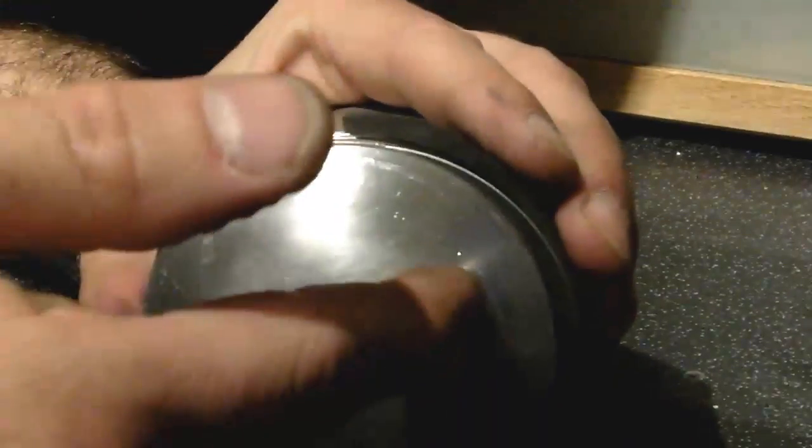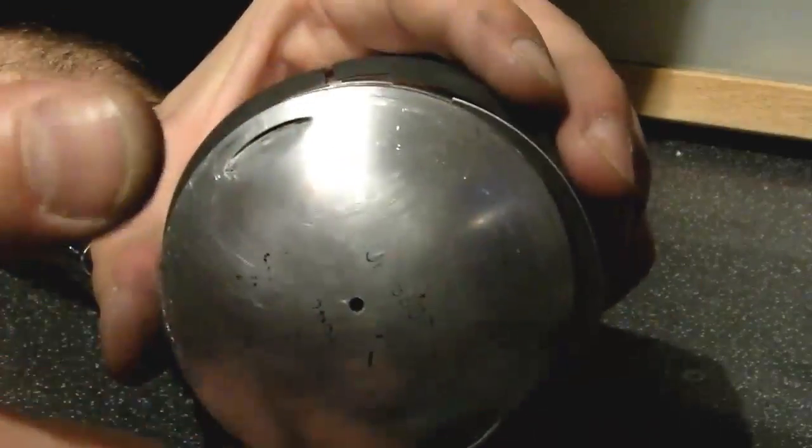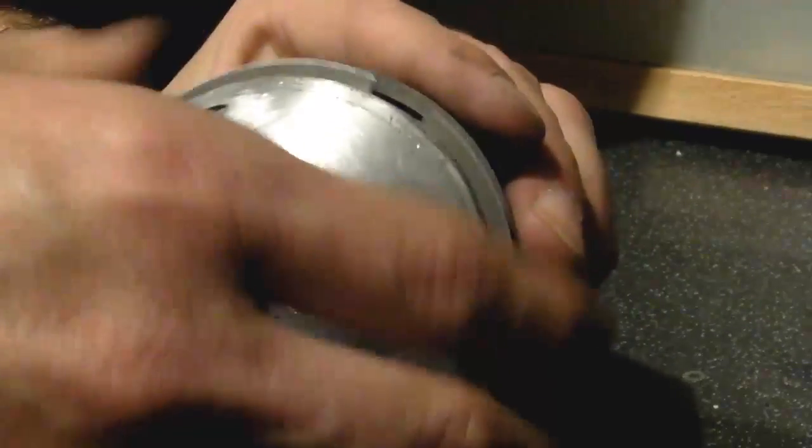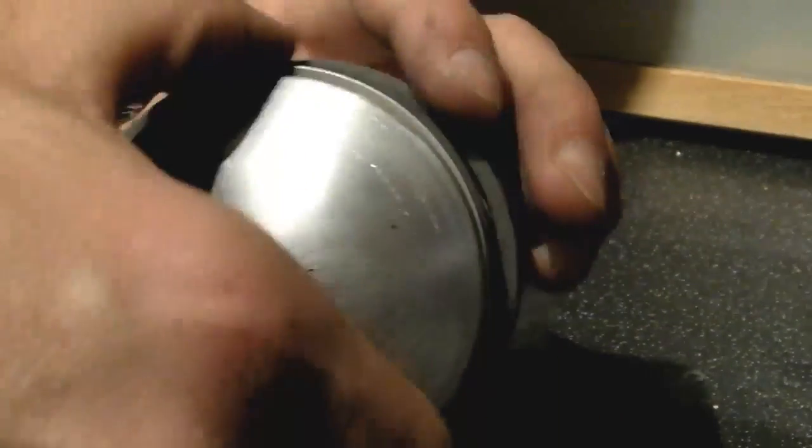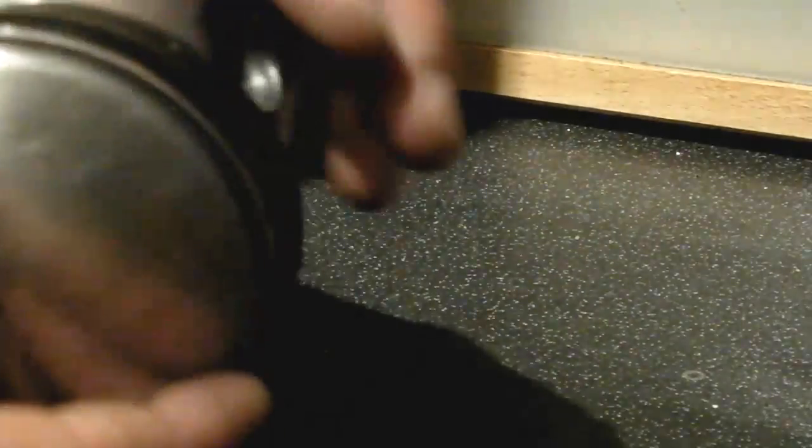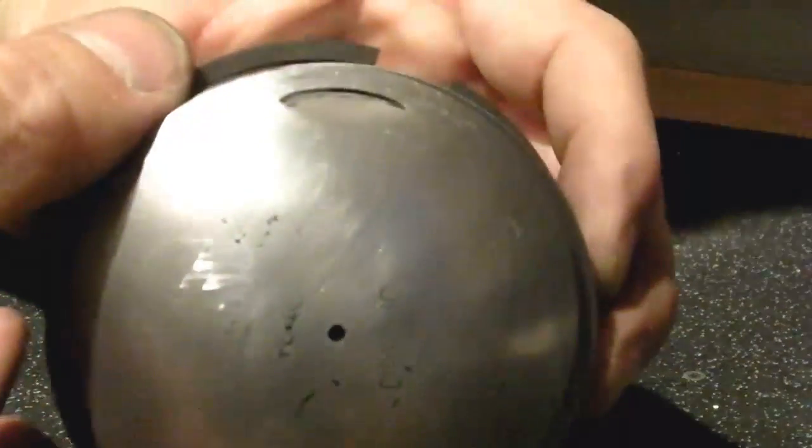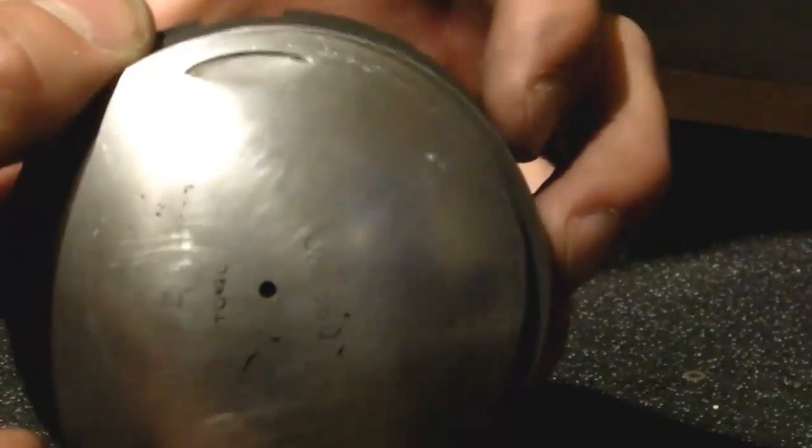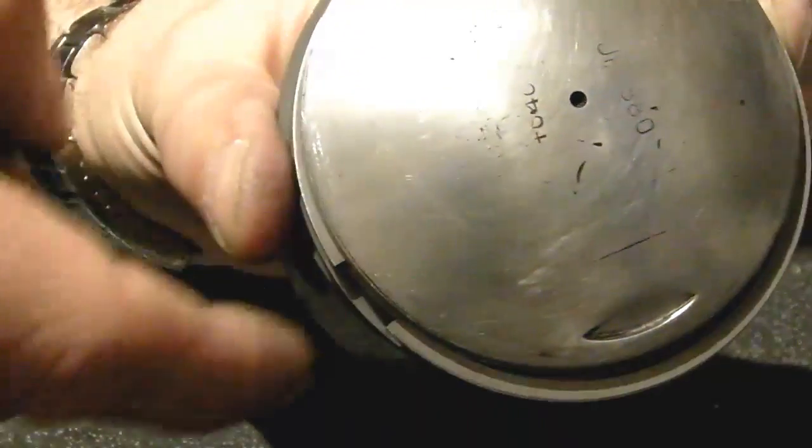And it will look something like: oil control ring up at the top there, your second scraper ring down here, and your top scraper ring over here. So that's just roughly, of course, but hopefully that's clear enough to explain to you.